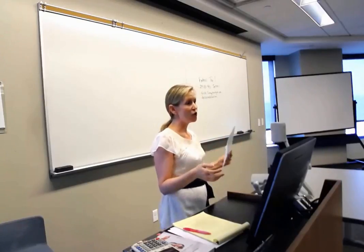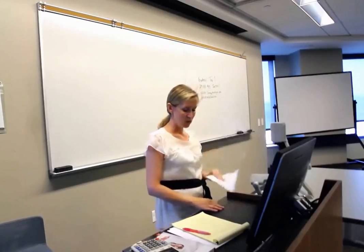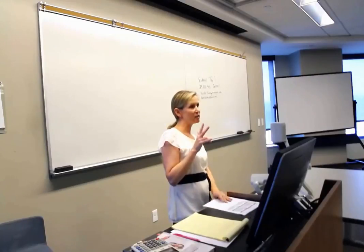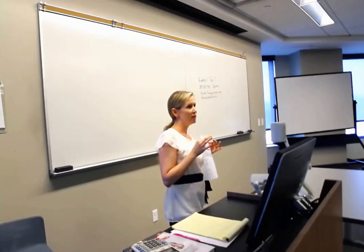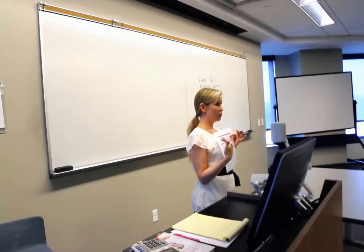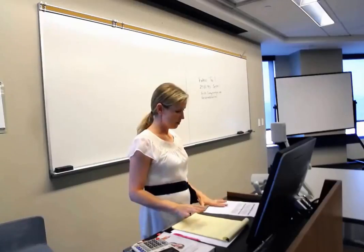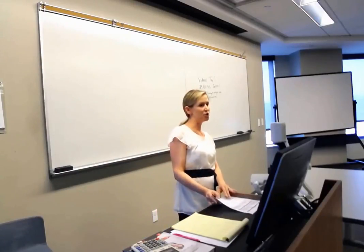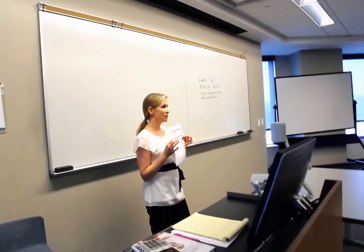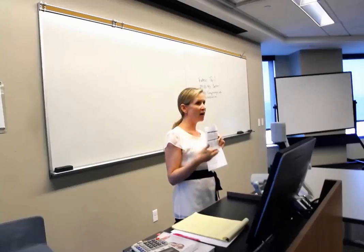At that point you're going to turn to the tax schedule and figure out how much tax you owe. There are four different schedules, and it's based on filing status. There are actually five different filing statuses, but two of them share a schedule. When we get to Chapter 4, we're going to talk about how to pick our filing status. This is considered a progressive schedule. Federal income tax is a progressive tax, and what that means is that as you earn more taxable income, you get taxed at higher and higher rates.